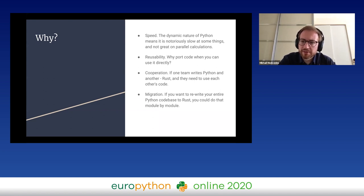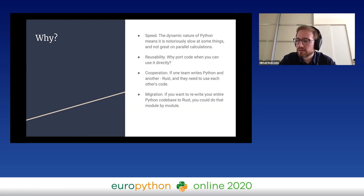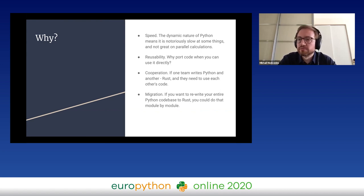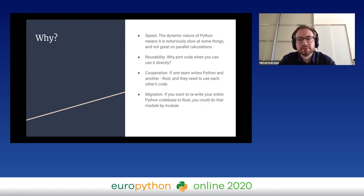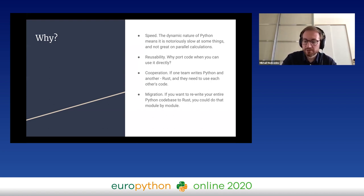The next reason would be cooperation. For example, in your company one team might work in Rust and another in Python, and it would be nice to find a way for them to use each other's code. Another reason might be migration — suppose you want to rewrite your whole project from Python into Rust. You don't have to do that all at once; you can do it module by module and import what's already ported into what you still have in Python.